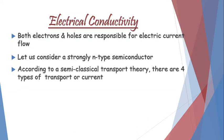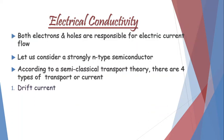We have a theory called semi-classical transport theory, according to which there are four different types of transport occurring, or four different types of currents. The first one is the drift current, which is caused due to the electric field, and its direction is always in the direction of the applied electric field.